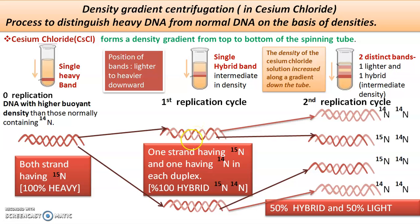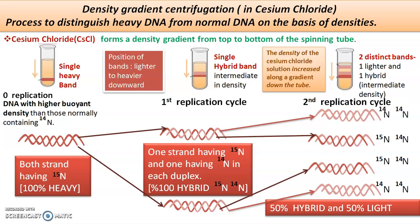The old strand separates, and the newly synthesized strand is lighter because it incorporates N14 from the nutrient medium. In the next generation, cells cultured again in N14 would produce both totally light bands and hybrid bands — some strands fully incorporating N14 and some retaining the original heavy strand paired with a new light one.